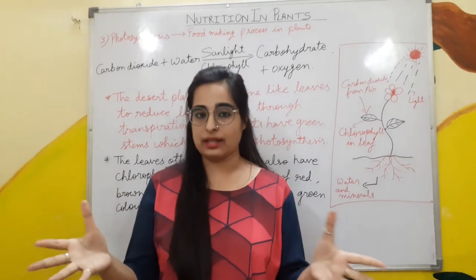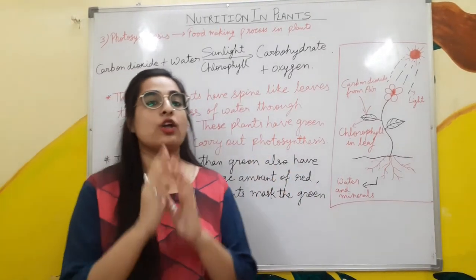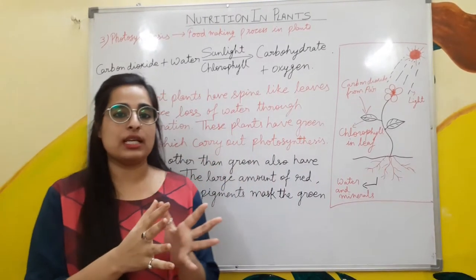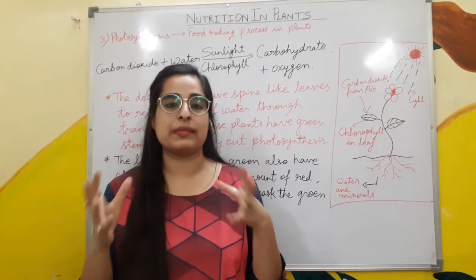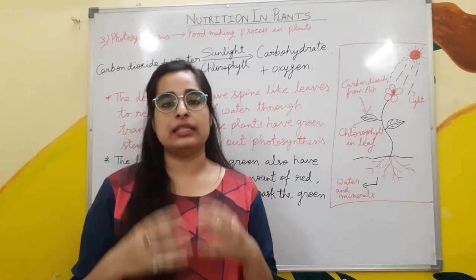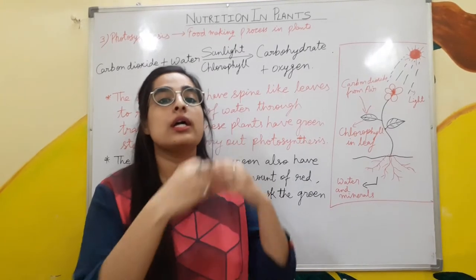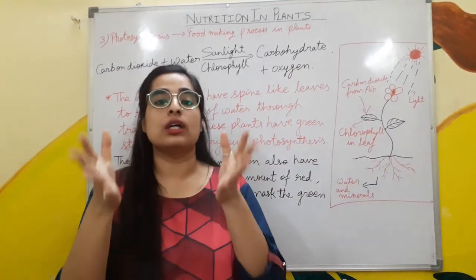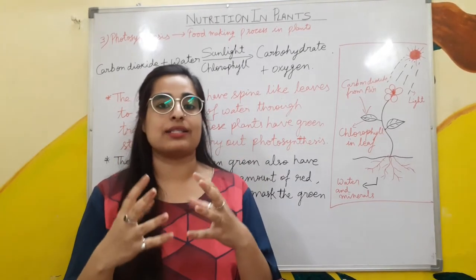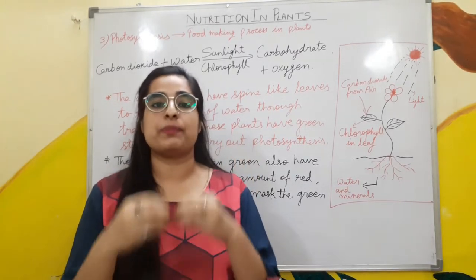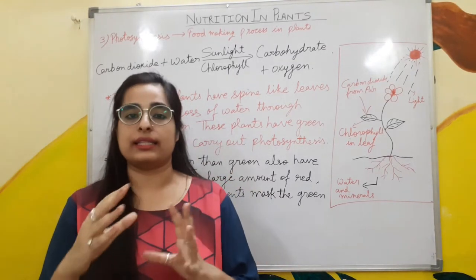There are some plants in which the green stems carry out the process of photosynthesis and not the leaves. The example is desert plants. Desert plants have spine-like leaves — leaves like needles — which reduce the loss of water through transpiration. So photosynthesis takes place in the stems, because these plants have green stems, chlorophyll is present in the stems, and the process of photosynthesis is carried out by their stems.